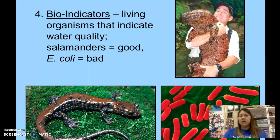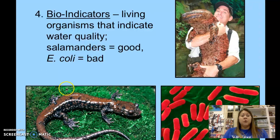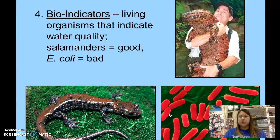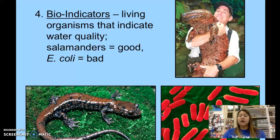Number four is bioindicator. The stem 'bio' means life. Bioindicators are living organisms that indicate how good or bad a water sample is. A bad water sample might have lots of E. coli bacteria — which causes digestive problems like diarrhea. If E. coli is in a water sample, that's not good. You wouldn't know just by looking; you'd need a microscope.